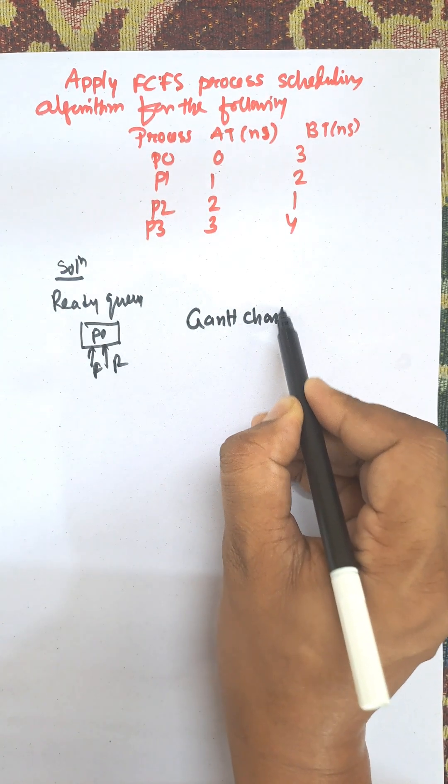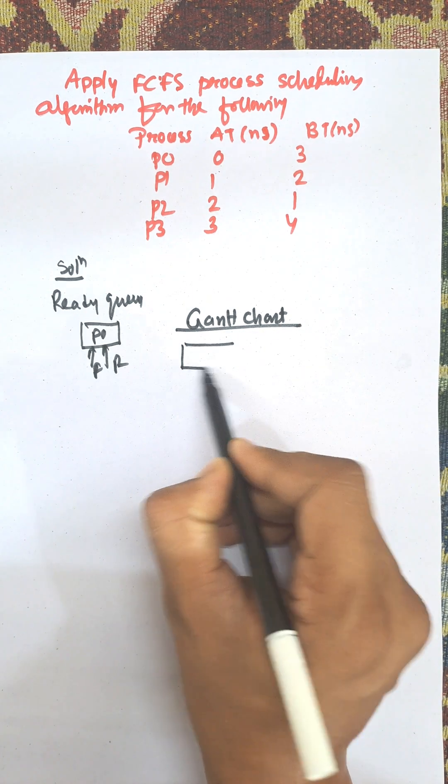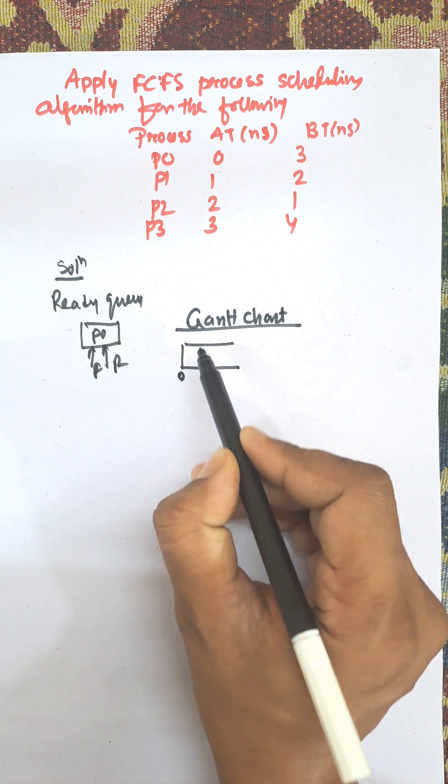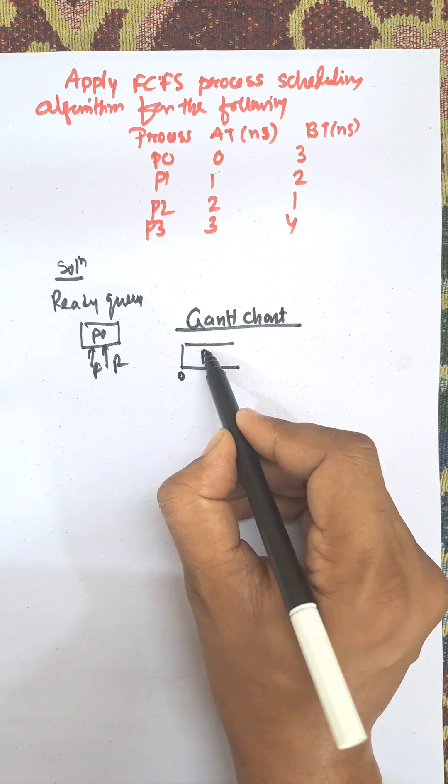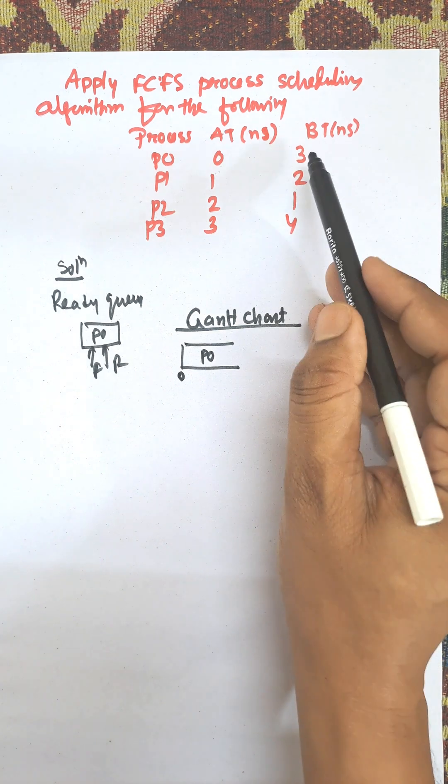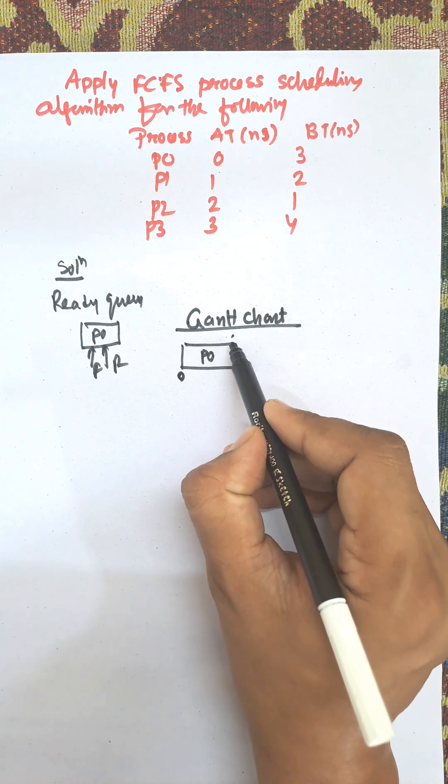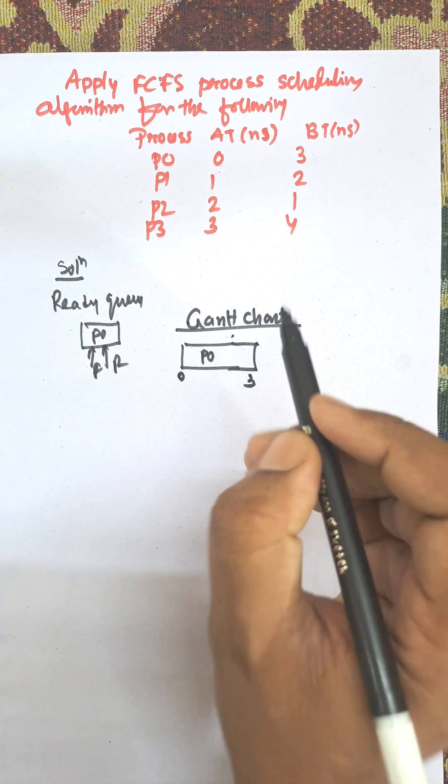Gantt chart is the most important for process scheduling. We need to draw the first process. As P0 arrived first, P0 will be served first and total burst time equals 3, so it is completed.